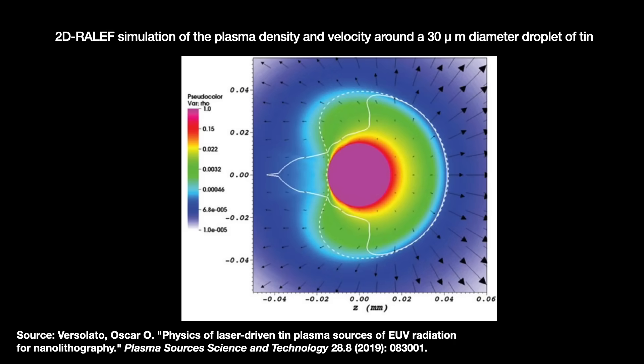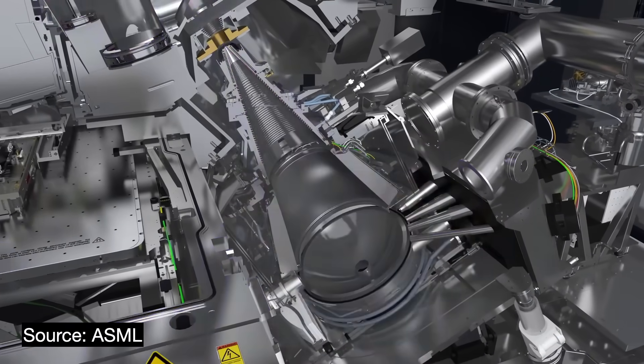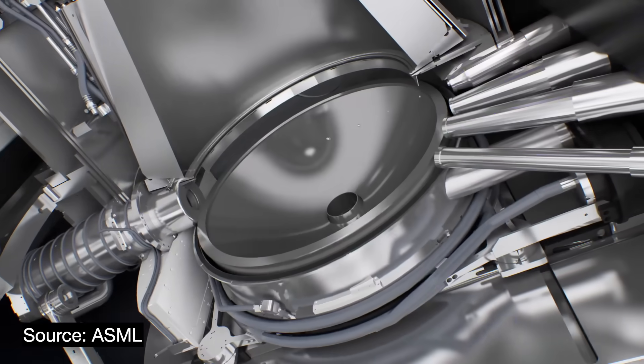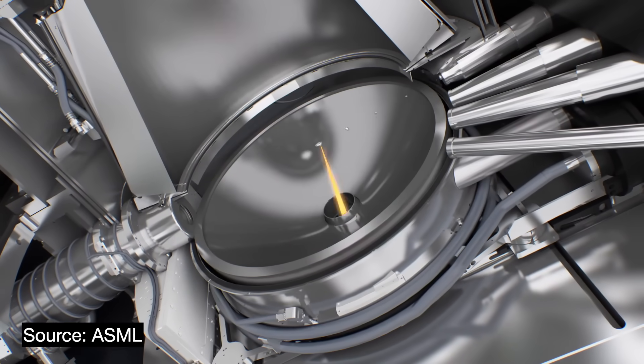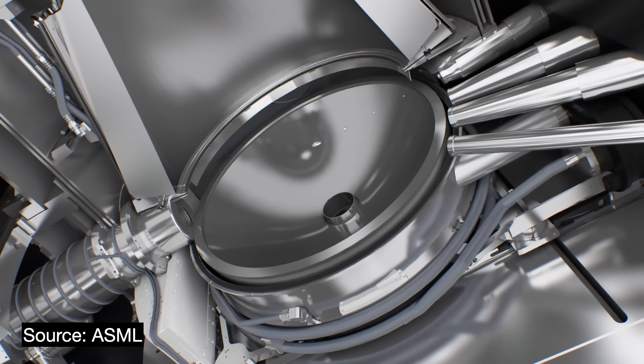When a droplet turns into plasma, it creates a small wind — like a fart. So if the droplets are too close to one another, the plasma winds from the preceding droplet impede the droplet coming after it. Progress continues, of course, but this shows that our ways of increasing CO2 power on droplet are somewhat limited. So the other lever to pull is to improve the conversion efficiency — and the answer, as with everything in life, involves lasers.